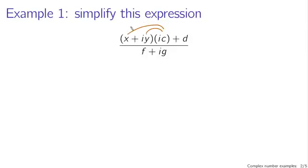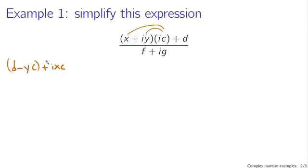We're going to have x times ic — that's going to be a complex part, so I'm going to write that down as ixc. And then we're going to have iy times ic, which is going to be minus yc — that's going to be real. We also have a real part in the numerator from d, so I'm going to write this as d minus yc plus ixc. That's the result of multiplying this out.